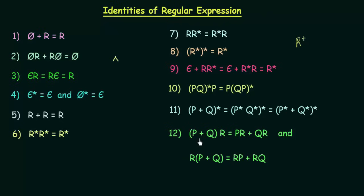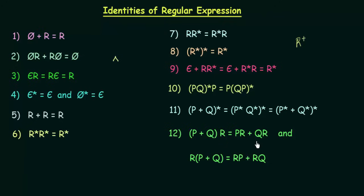The last identity says (p + q)·r = p·r + q·r. You can remember it this way: you have the union of p and q, and a concatenation of r. It is just like distributing r inside — you get p·r, the union is retained, and then q·r.